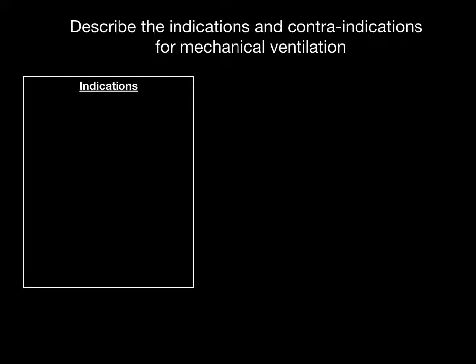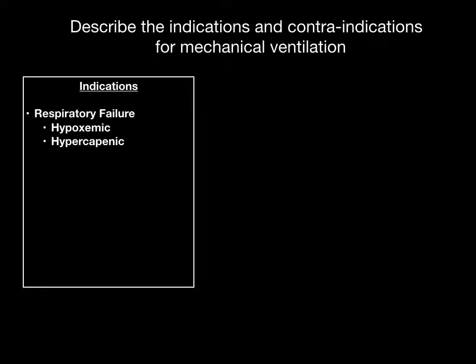Let's talk about the indications and contraindications of mechanical ventilation. I think of three different types of indications. The first one is what most people think of — respiratory failure. Within respiratory failure, you have hypoxemic respiratory failure, meaning the patient can't oxygenate. You can have hypercapnic respiratory failure, meaning the patient can't ventilate or get rid of CO2. And many patients have a little bit of both.